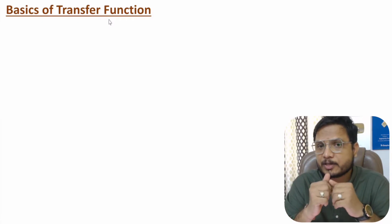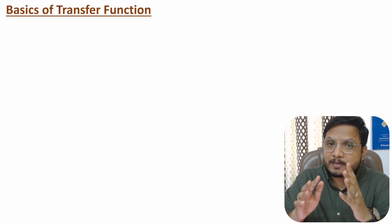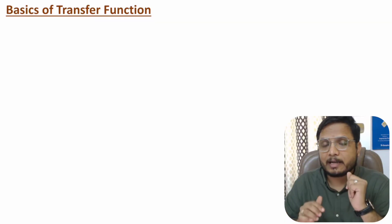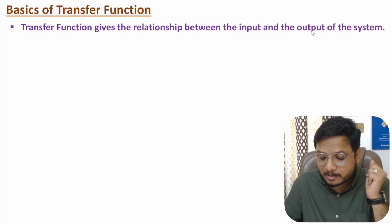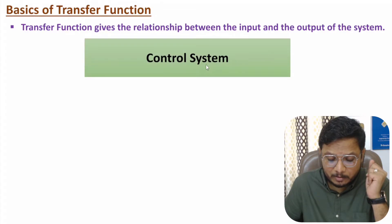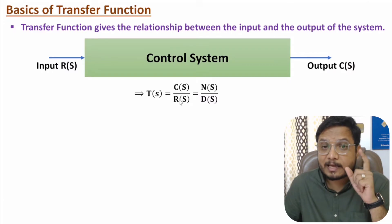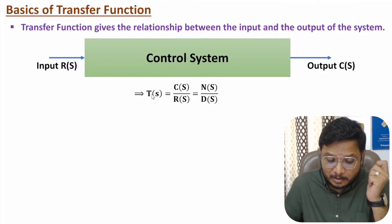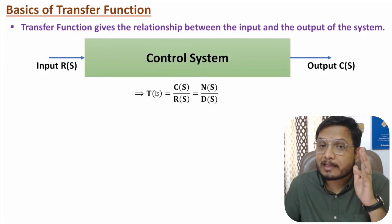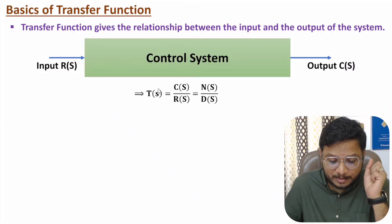Transfer function is a ratio of output divided by input. It gives the relationship between output and input of the system. If we have a control system to which input is R(s) and output is C(s), then transfer function is C(s) divided by R(s). Transfer function is represented in the form of S-domain, which means Laplace domain.